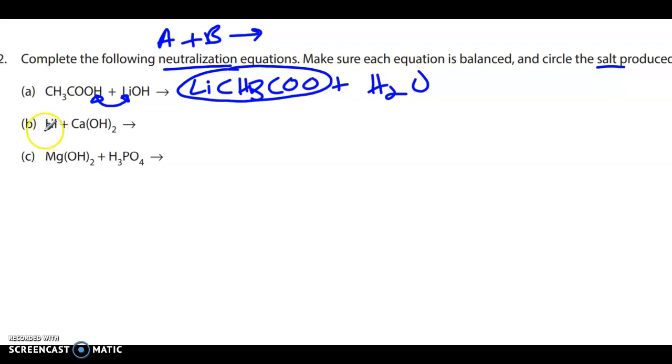So then this should already be balanced. And our salt is lithium acetate. Here we have hydroiodic acid and calcium hydroxide, right? So we're going to have the swapping happening. We're going to have calcium iodide. Oh, that's a 2, right? We're still doing crisscross rules when we're making new compounds. And, of course, water. And then to balance this, you'll need a 2 and a 2. Okay. And the salt is, of course, calcium iodide.